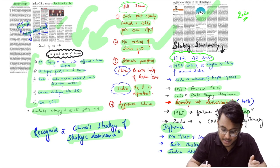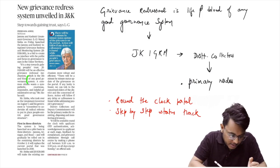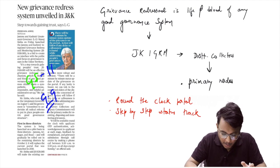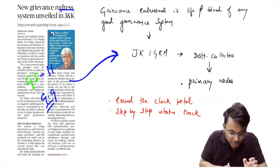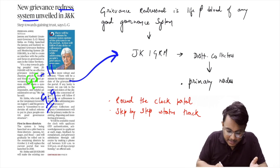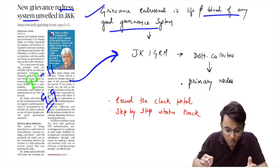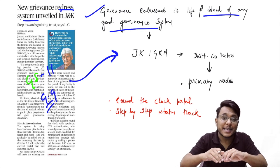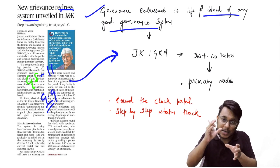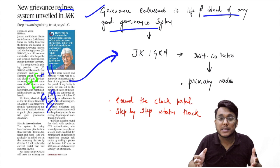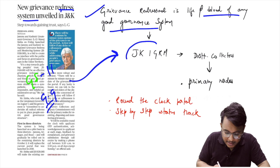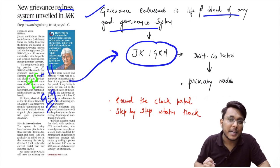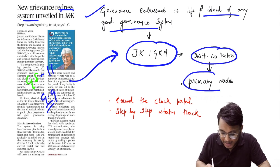The next article relates to GS Paper Number 2, Good Governance. Jammu and Kashmir has launched a new grievance redressal mechanism. Grievance redressal is the lifeblood of any good governance system — it creates a two-way connection between the state and citizens, allowing real-time input and letting the state prove its legitimacy. J&K has started the JKIGRM — Jammu and Kashmir Integrated Grievance Redressal Mechanism — under which all government offices will be linked and district collectors will be the primary nodes, coordinating all complaints in a time-bound manner.